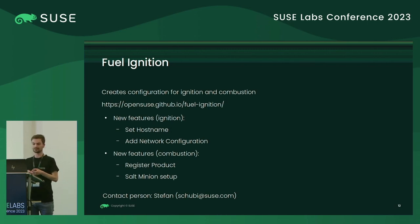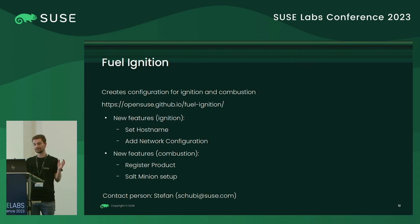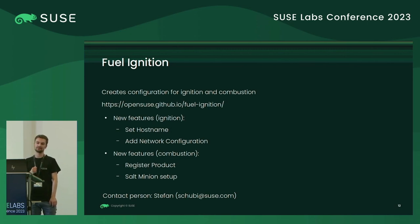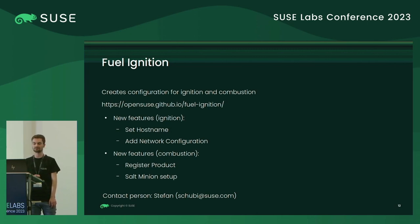New features include the ability to set the hostname in Ignition Config and perform basic network configuration — not everything, as network configuration can be really complex, so it's just the basics currently. In Combustion, you can now register your product in the case of SLEE Micro by calling SUSEconnect inside the script, and you can also configure the Salt minion so that it registers with the Salt master. Contact person for that is Stefan.